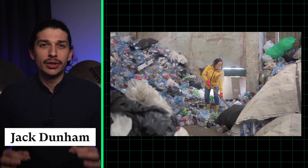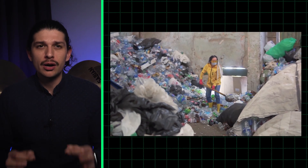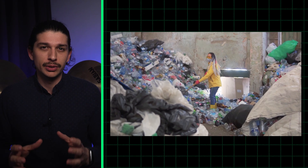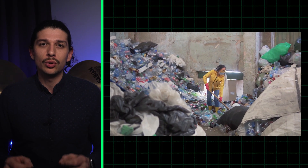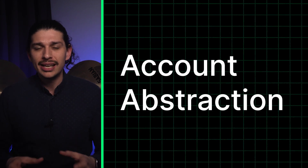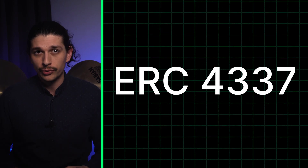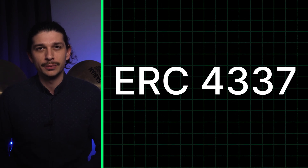Rummaging through a garbage dump for the private keys to access over half a billion dollars of Bitcoin is hardly an optimal user experience. Now, with a new phenomenon called account abstraction, the days of searching for lost keys and seed phrases could become a thing of the past. Today, we're figuring out what ERC-4337 is and how exactly it solves this problem.